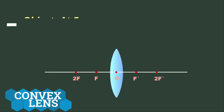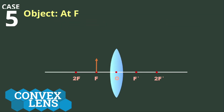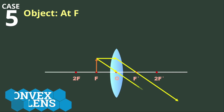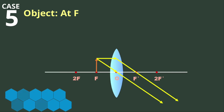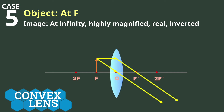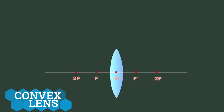In Case 5, where the object is placed at F, using Rules 1 and 2 for the first and second light rays respectively, notice that both refracted rays are parallel to each other. Hence, the image will be formed at infinity. So when the object is placed at the focus F, the image is formed at infinity, highly magnified, real, and inverted.